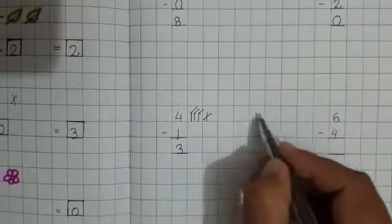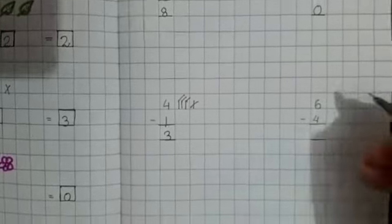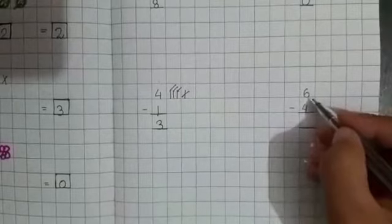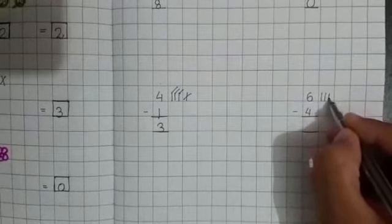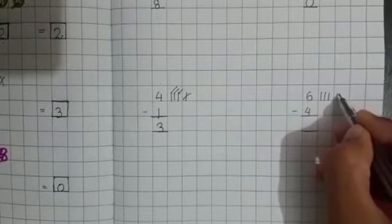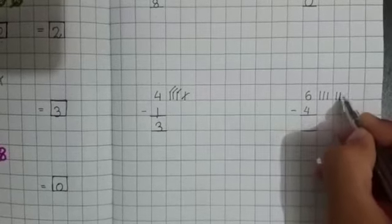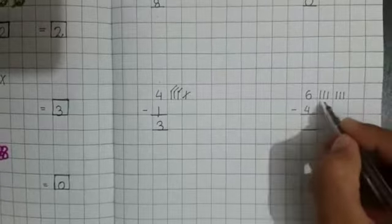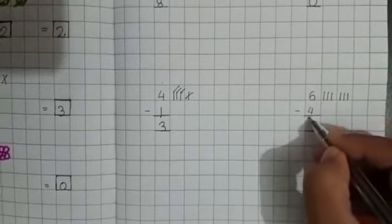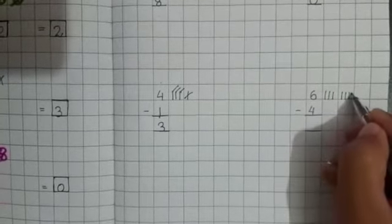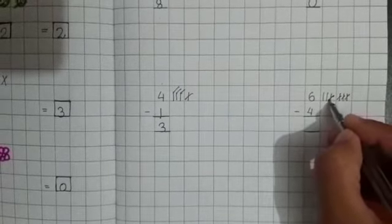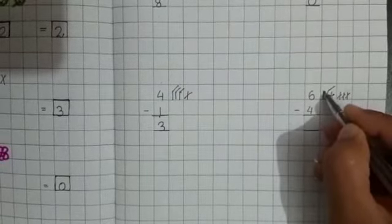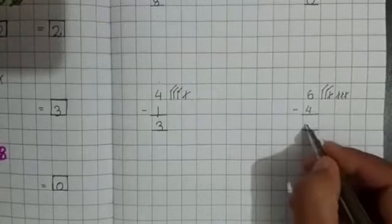Again leave the boxes. Yes. Your next digit is 6. Yes. Draw 6 lines. 3. Very good. Count, count, count. 4, 5 and 6. And out of 6 you have to take out 4. Just strike it. 1, 2, 3, 4. How many are left? 1, 2. Okay.